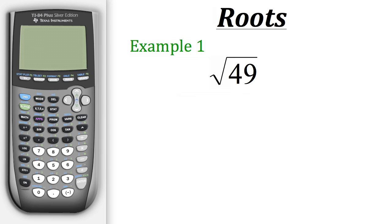So here we have the square root of 49. Now if we want to evaluate that on our calculator, we need to use the function that's right here. There's a blue square root symbol there. Now in order to get to it, we need to hit Second, because it's the blue button, and then hit this x-squared button. And that will get us to the square root.